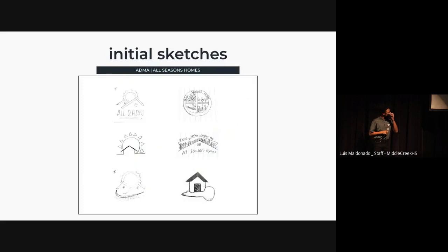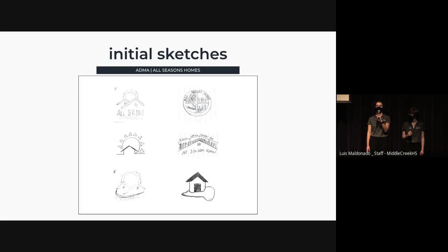Between the three of us, we came up with a wide assortment of sketches. We wanted something that stuck out from the competition while at the same time fit our client's needs. A lot of our sketches included a house and the idea of seasons. When we finished brainstorming and sketching, we picked three of our best sketches based on design and concept. After picking our three, we proceeded to finalize them into thumbnails.